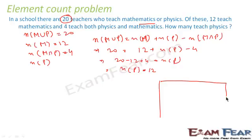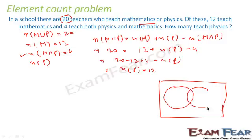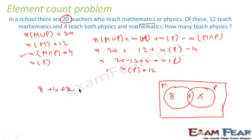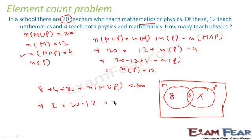If you want to solve the same question using a Venn diagram, we create two intersecting boxes — one for M and one for P. M intersection P is 4, so we place 4 in the middle. Since M is 12, the part of M outside the intersection is 8. Letting the part of P outside the intersection be X, we get 8 + 4 + X = 20, so X = 8. Therefore the number of elements in P is 4 + 8 = 12.